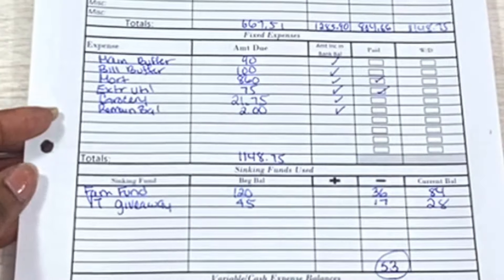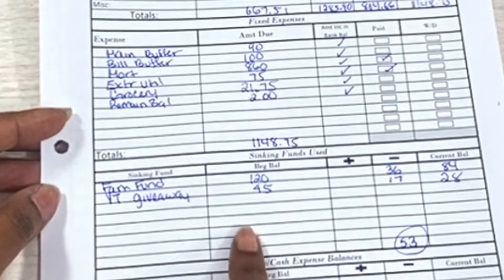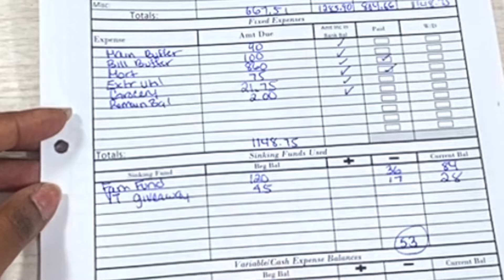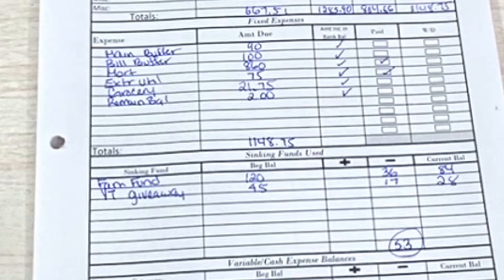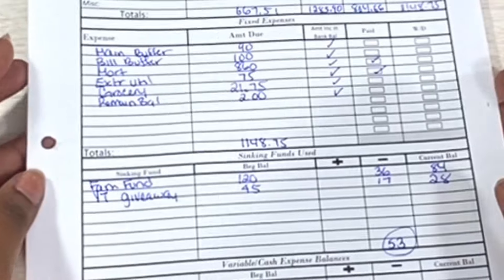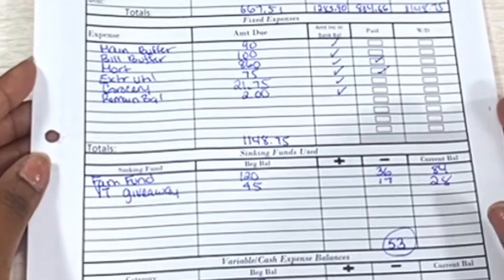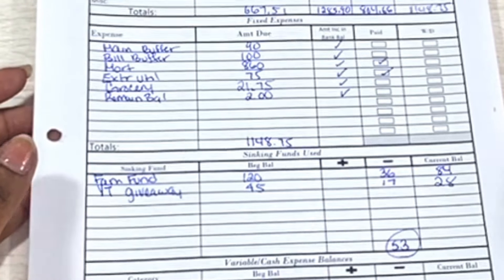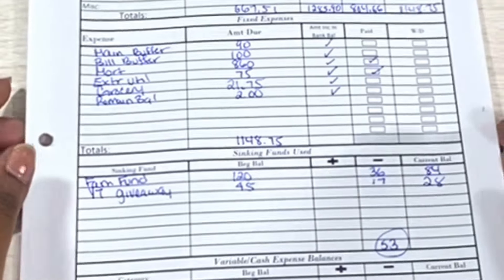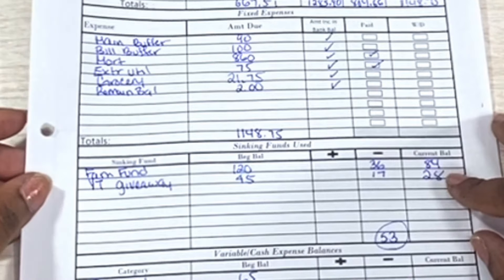Sinking funds used. So this past week we used family fund and we used the YouTube giveaway. You guys saw me on payday take out that $7, take out that $17, and that was to pay for the binder that I gave away. So I gave away a savings challenge binder that cost me $17, so I took that money out so that I could pay back the card that I used to pay for it. And family fund, we spent $36. We went out and we spent $36 of that family fund on entertainment, so it leaves a balance of $84 in the family fund and for YouTube giveaway there's $28 in there.